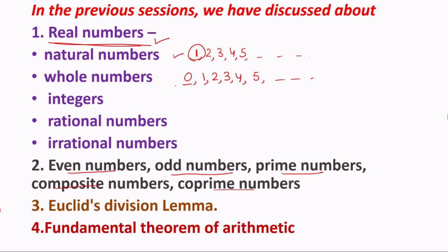If we take the negatives of all natural numbers — minus 3, minus 2, minus 100, minus 500 — all such numbers are known as integers. Integers contain all natural numbers, zero (whole number), and negatives of all natural numbers.